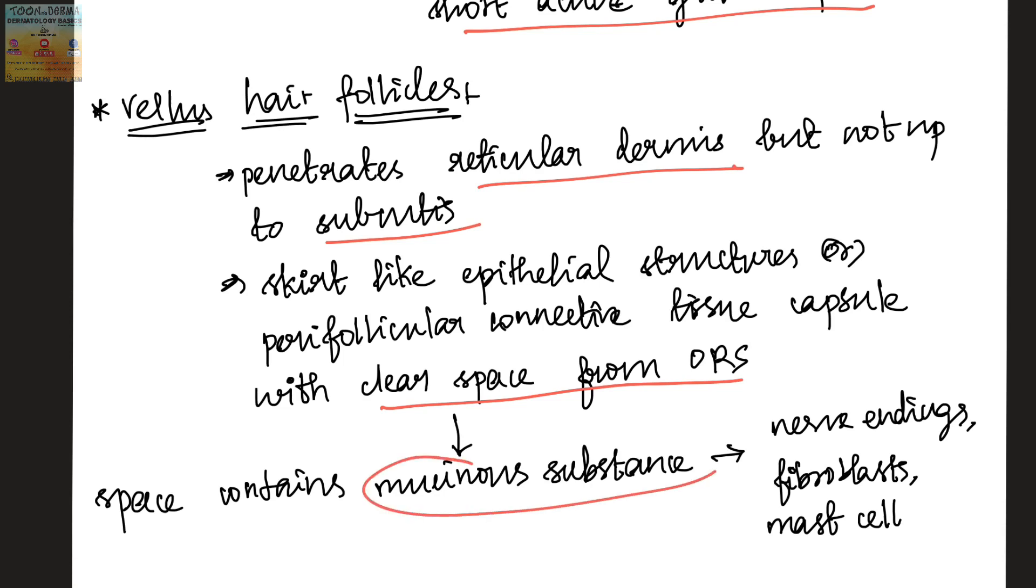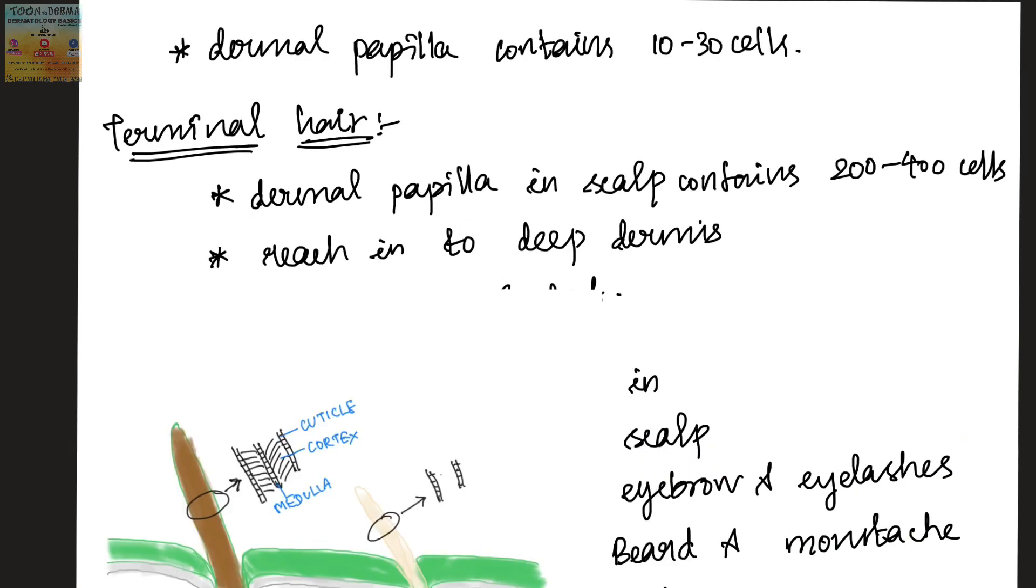The dermal papilla usually contains 10 to 30 follicular cells in vellus hair, whereas in terminal hair the dermal papilla contains almost 200 to 400 cells and they reach into the deep dermis. The vellus hair does not reach into deep dermis.